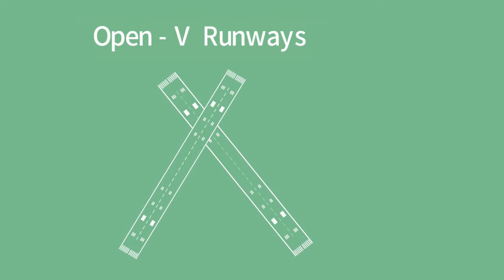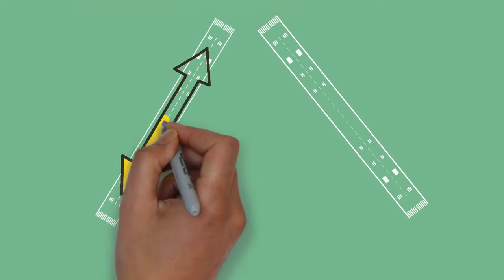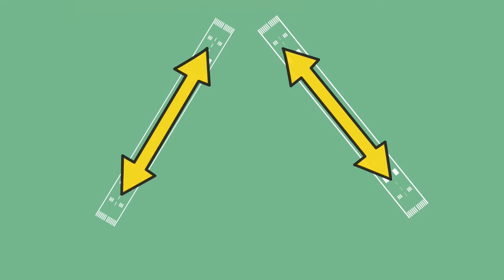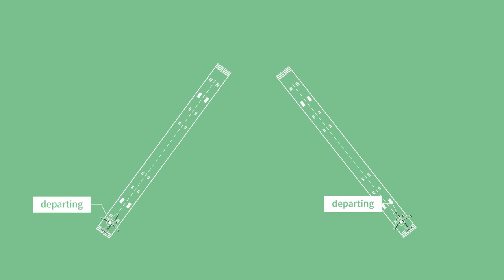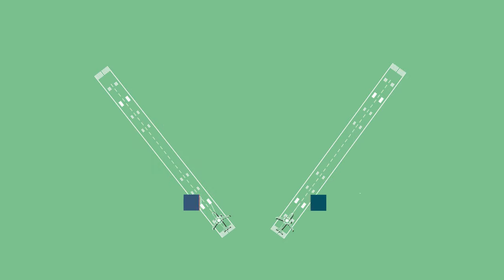Open V runway means runways in different directions but non-intersecting runways. The capacity of the open V runway varies depending on the direction of the aircraft on each runway. If two aircraft take off from each runway and the takeoff direction is converging, the controller must hold one of the two aircraft. On the other hand, if the takeoff direction is diverging, independent takeoff is possible and capacity increases.